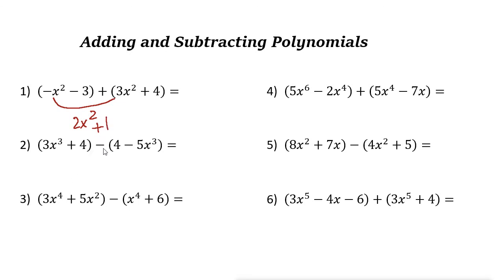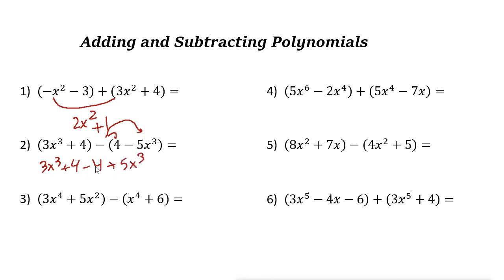The next one has a minus sign. When you have minus, the easiest way is to multiply that negative 1 to all terms inside the parentheses, then combine like terms. So we have 3x cubed plus 4. Negative times 4 is negative 4, and negative times negative 5x cubed is positive 5x cubed. So 4 minus 4 cancels out, and 5 plus 3 is 8. The answer is 8x cubed.